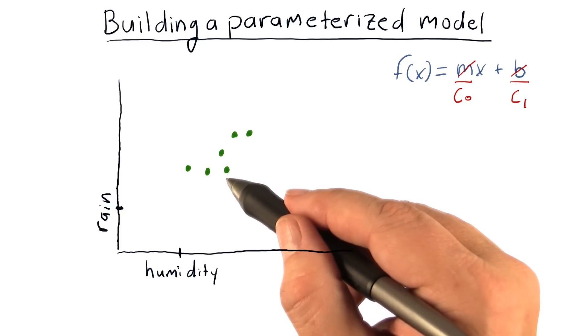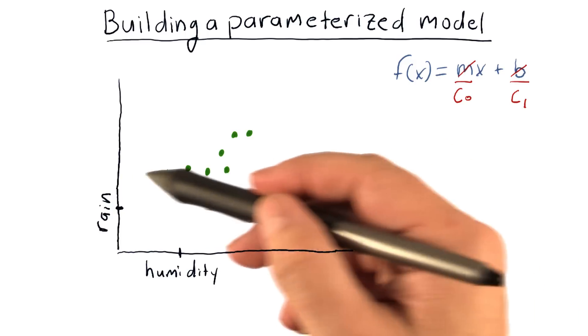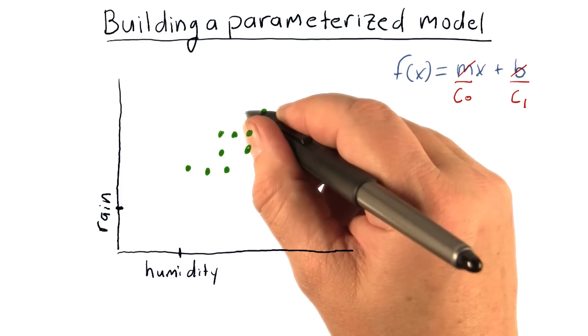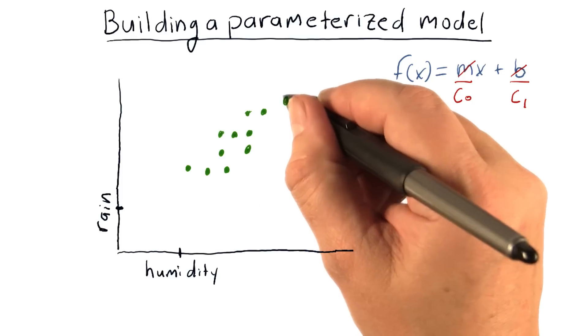So each dot here represents one day and one sample of data. So on this date, it was this humid, and it rained that much. Now we probably have lots more data, one for each day.